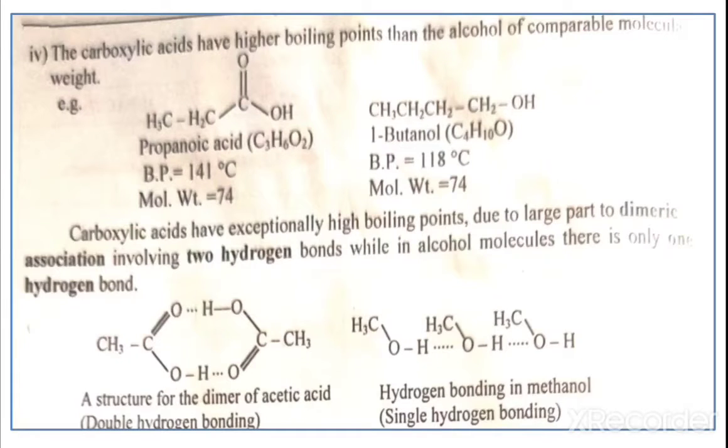Carboxylic acids have higher boiling points than alcohols of comparable molecular weight. Here the structures are given. This is propanoic acid, C3H6O2.